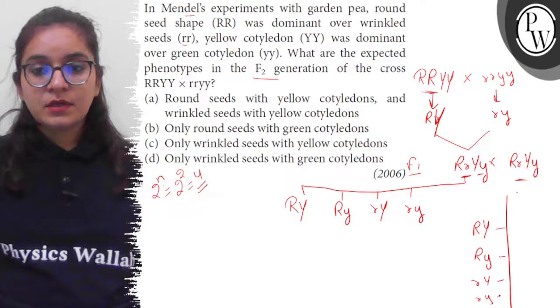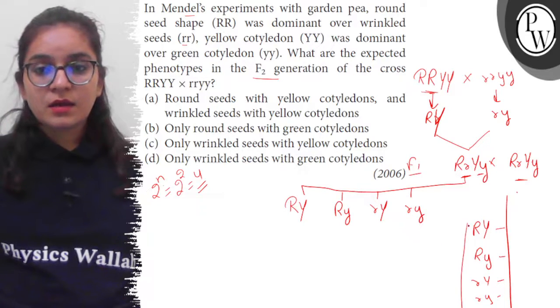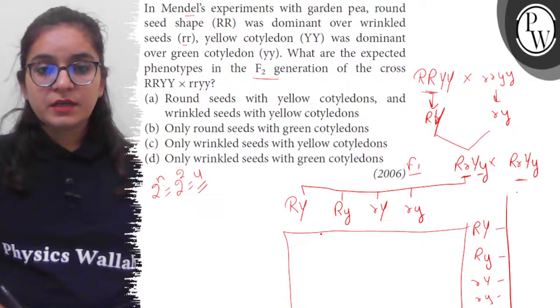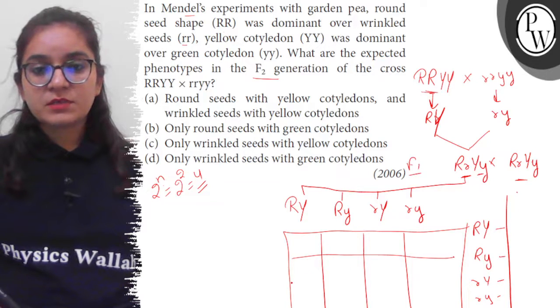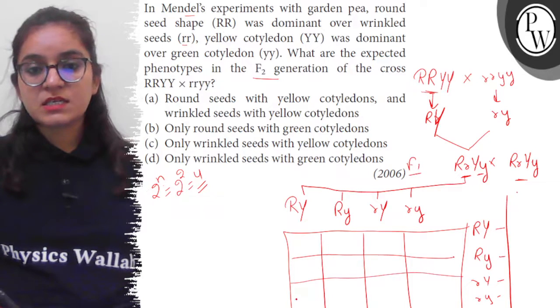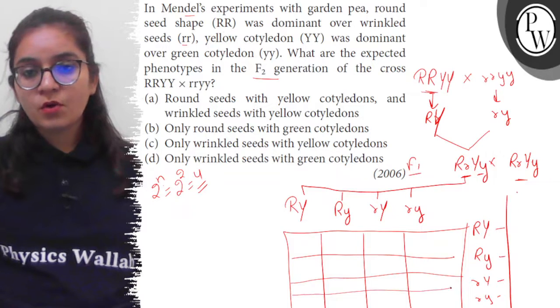Now we will do it for the actual generation of individuals. So how many types of individuals will come to us? Total 16 types of individuals: 4 into 4 equals 16.